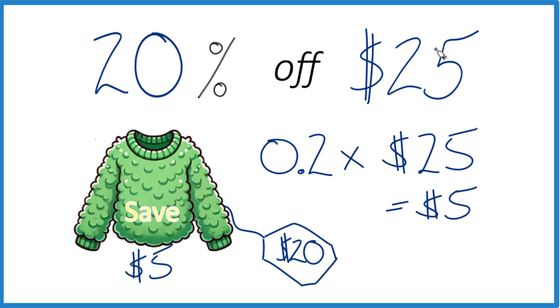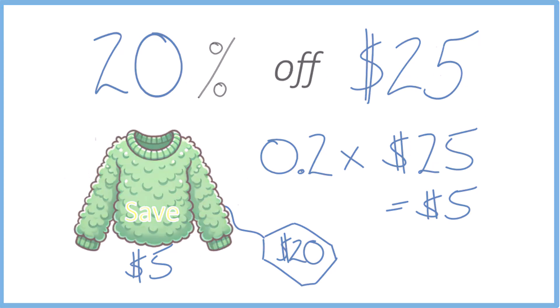25 minus 5 — that's where we got our final price of $20. So that's how you take 20% off $25 for your lovely green sweater. Thanks for watching.